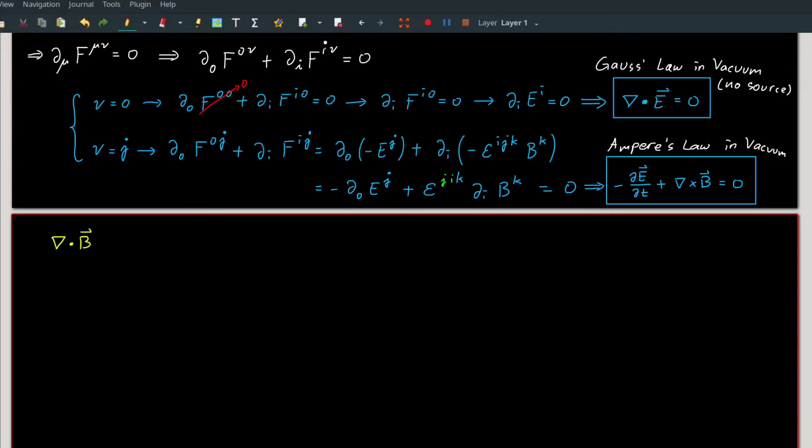For the other two Maxwell's equations, the divergence of B and curl of E plus time derivative of B, they should already be satisfied implicitly by the definitions of A and F. To prove this, let us write the E and B in component form, or in index notation. We can quickly write the i-th component of E using the definition of F as given in the problem.